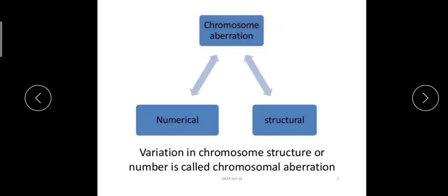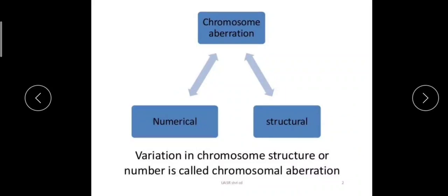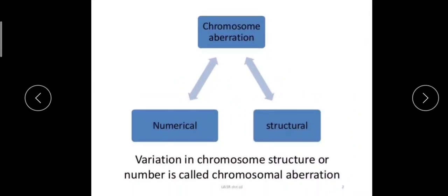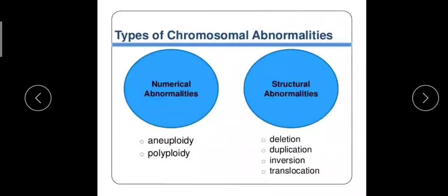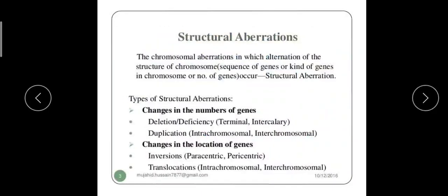So chromosomal aberration may be of two types: numerical aberration, which involves changes in the number of genes or chromosomal segments, and structural aberration, which is any change in the structure of a chromosome. We are now going into the details of structural aberrations, which are of four basic types: deletion, duplication, inversion, and translocation. We will be dealing with deletion only for today.